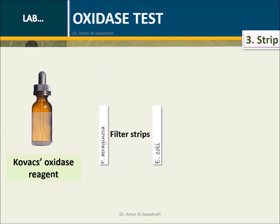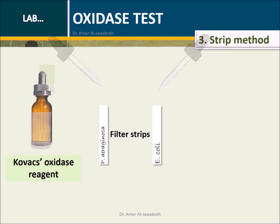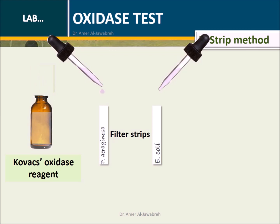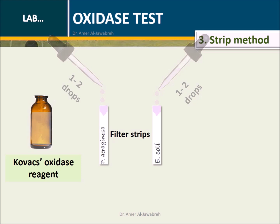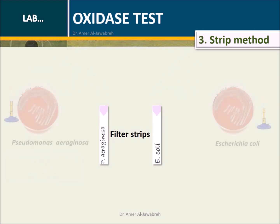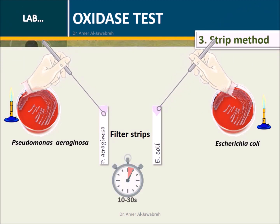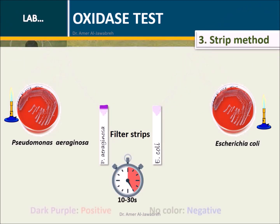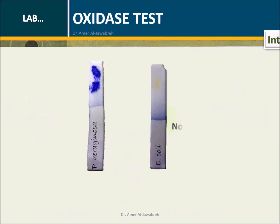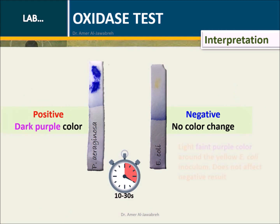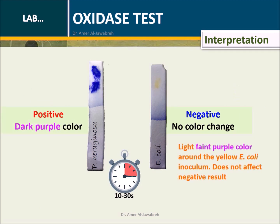Method 3 — Strip method: Add 1 to 2 drops of fresh Kovacs reagent on a strip of filter paper and allow to soak. Pick a few isolated colonies from the plate with a plastic or platinum loop or wooden applicator and smear over the moist area. Within 10 to 30 seconds, observe for color change into dark purple indicating positive results. No color change indicates negative results. A light faint purple color around the yellow E. coli inoculum does not affect the negative result.